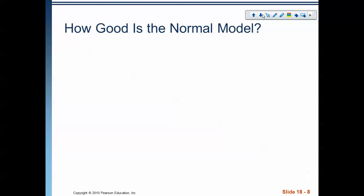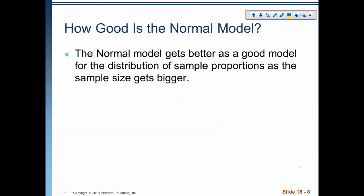The normal model gets better as a distribution of sample proportions as the sample size gets bigger. With only one sample, the normal model isn't very accurate — but the more samples we have, the more accurate it becomes, up to a point. We'll talk about those things and all the requirements in our next video. This is just an introduction to what sampling distributions are. In the next video, we'll be discussing the assumptions and conditions needed to use a sampling distribution.